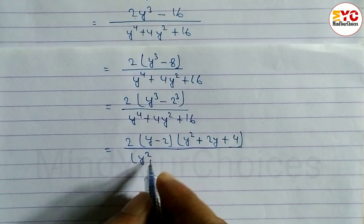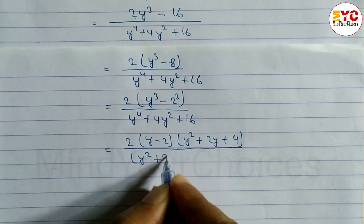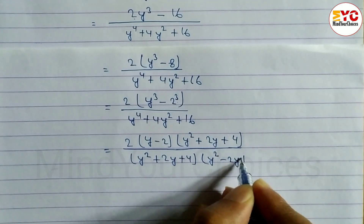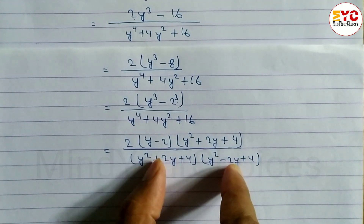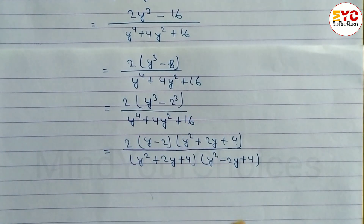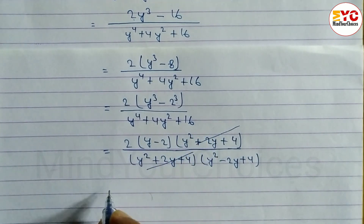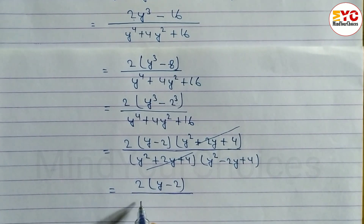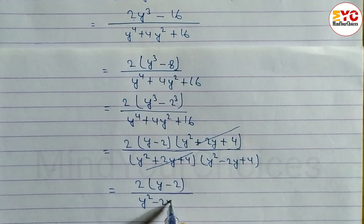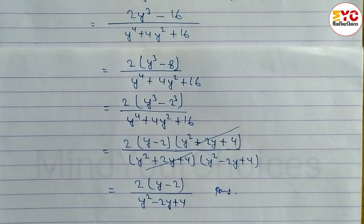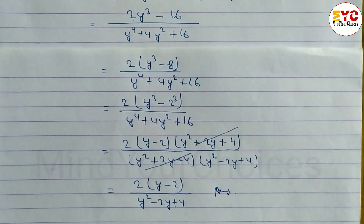The denominator has y squared plus 2y plus 4 and y squared minus 2y plus 4 multiplied together. Now you can see here this term and this term we can cancel — they are the same — so what is remaining is 2(y minus 2) divided by (y squared minus 2y plus 4), and that is your answer. Hope you understand this question taken from class 10 algebraic fractions.